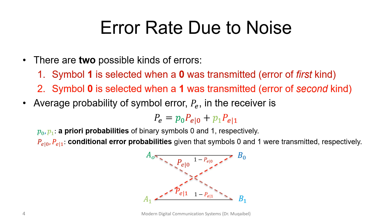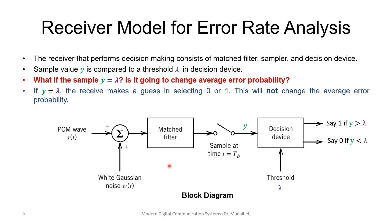This is our assumption and this is our model. To work out the performance of the system, you need a model. This is the receiver model for the error rate analysis in hand. The receiver that performs the decision consists of a matched filter followed by a sampler and a decision device. The received signal will be matched — we'll take a sample at the end of the duration TB and get a number Y. Then based on a threshold lambda, if it is more than the threshold we'll say we have 1; if it is less than lambda, equal to 0. Since we are dealing with a continuous range, the probability of being exactly lambda is equal to 0, but even then we can just flip a coin — that will not affect the probability.